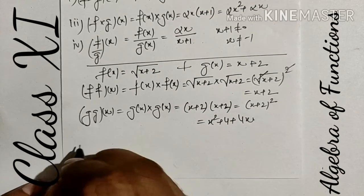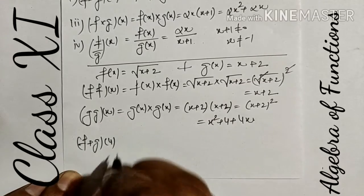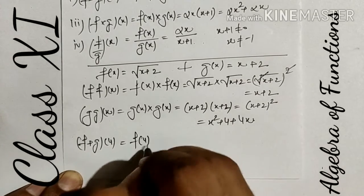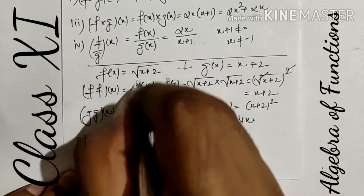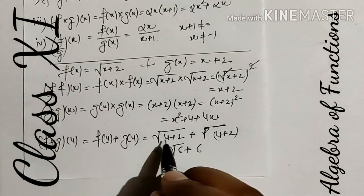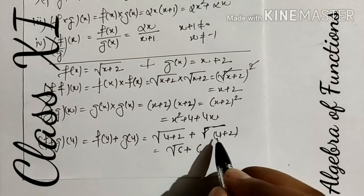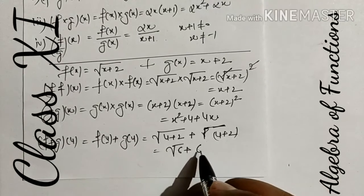Another value we have to calculate: (f+g) at 4. So it can be written as f(4) + g(4) equals √(4+2) + (4+2). Overall answer becomes √6 + 6.